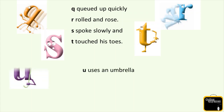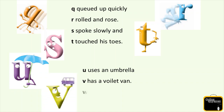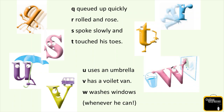U uses an umbrella. V has a violet van. W washes windows whenever he can. Now look at the picture - what is U doing? U is using his umbrella, maybe he is going out and it's raining. V has a violet van and he is very happy, playing with his van. And W is washing windows - whenever he has time, he washes all the windows.